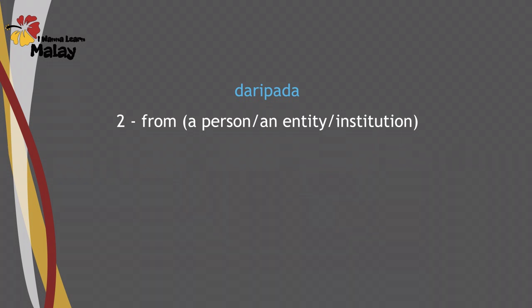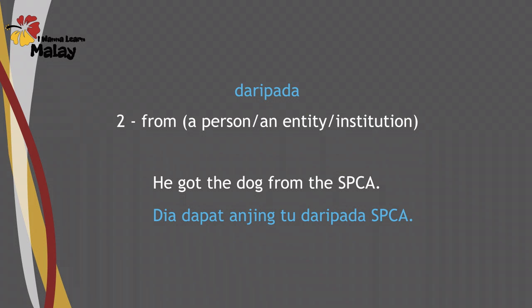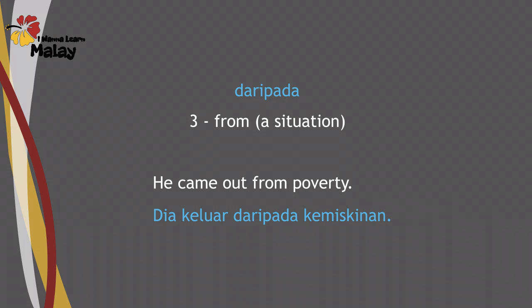Or when you're referring to an institution — it may be a place, but you're referring to it as an entity or institution. For example: 'He got the dog from the SPCA' — Dia dapat anjing tu daripada SPCA. Here SPCA is used as an entity that gave the dog to this person. Also: 'He came out from poverty' — Dia keluar daripada kemiskinan. The word miskin means poor, and adding the ke- and -an prefix and suffix converts it from an adjective to the noun kemiskinan, meaning poverty.